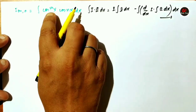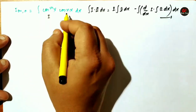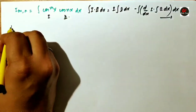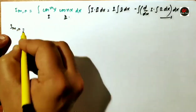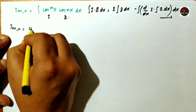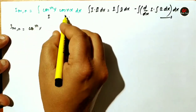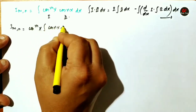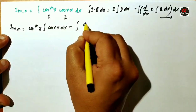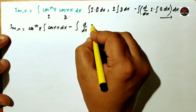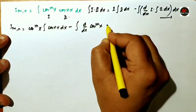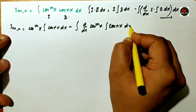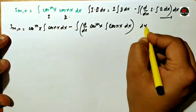I will assume cos^m(x) as the first function because we don't have a direct integration for it, but we do have one for cos(nx). Therefore, I will assume cos(nx) as the second function. So, I_mn will be equal to: first function cos^m(x) times integral of cos(nx) dx, minus integral of differentiation of cos^m(x) times integral of cos(nx) dx, whole dx.